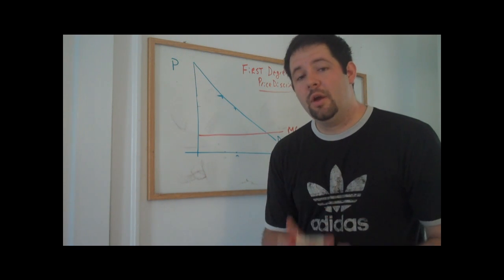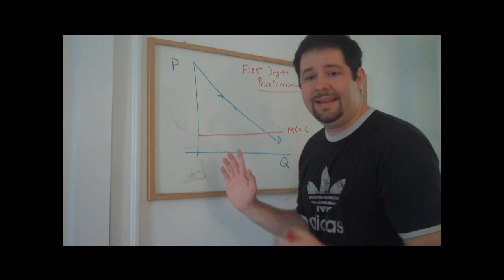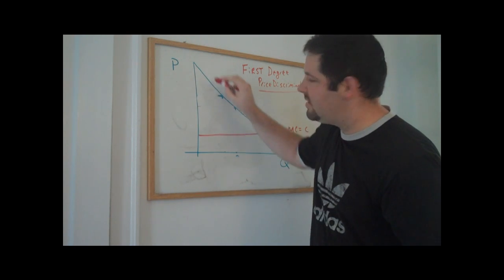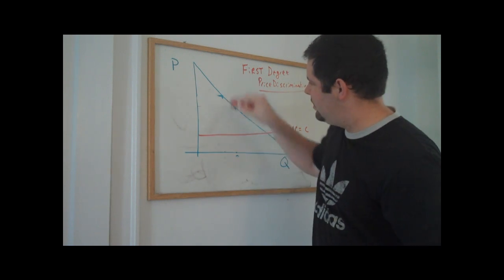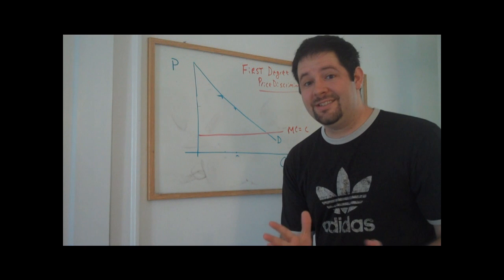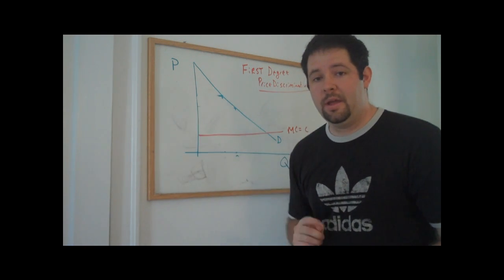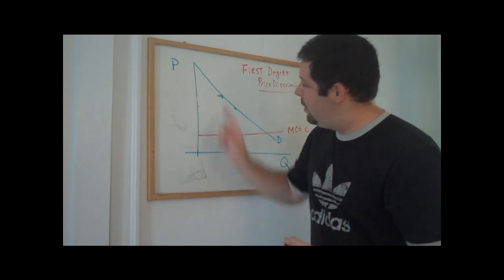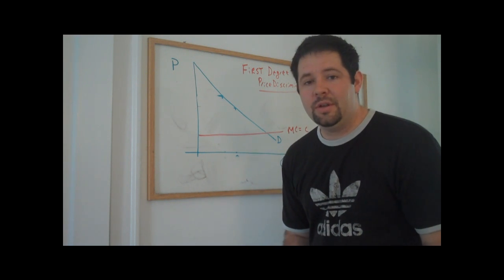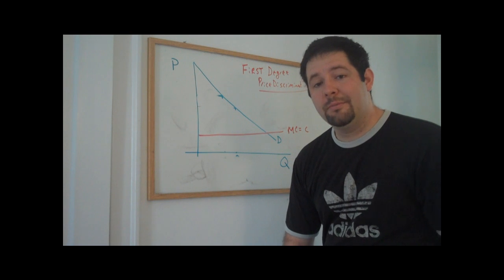What happens in first-degree price discrimination is that we look at this demand curve as a willingness-to-pay curve. For the first unit, the willingness-to-pay is high. For the second unit, the willingness-to-pay is a little bit lower, so on and so forth, down the demand schedule. The monopolist sees this downward-sloping demand schedule and says, it would be really nice to charge that first person's willingness-to-pay, the second person's willingness-to-pay, the third person's willingness-to-pay, all the way down until it's no longer worth selling the good to that person. And that's precisely what first-degree price discrimination accomplishes.